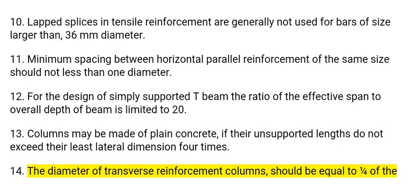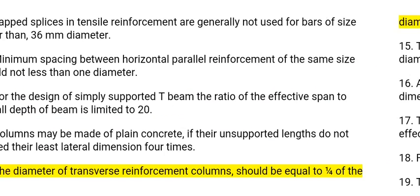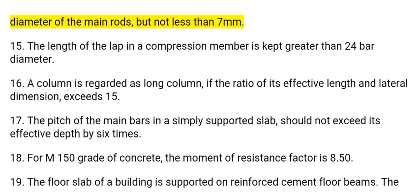14. The diameter of transverse reinforcement in columns should be equal to one quarter of the diameter of the main rods, but not less than 7 millimetres. 15. The length of the lap in a compression member is kept greater than 24 bar diameters.